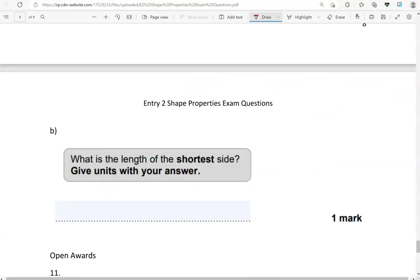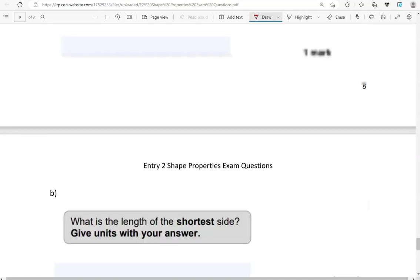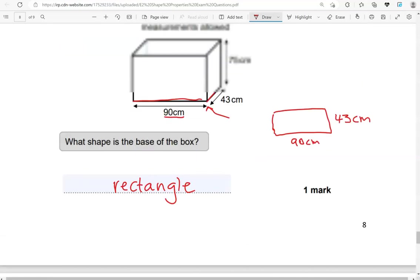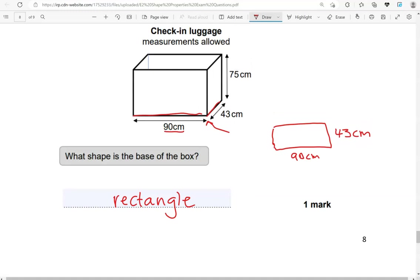What is the length of the shortest side? Give units with your answer. The shortest side is 43 centimeters, as we've got here.